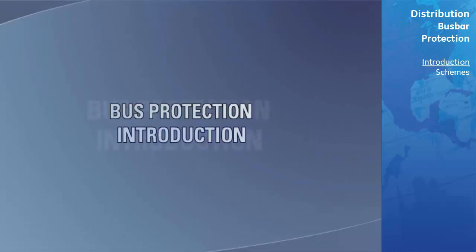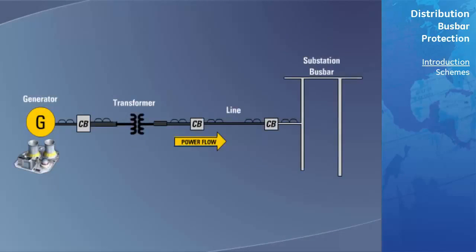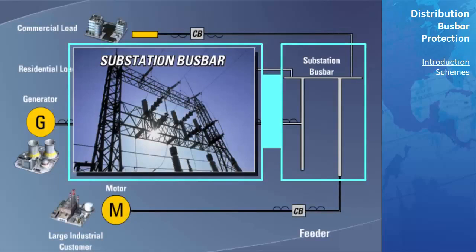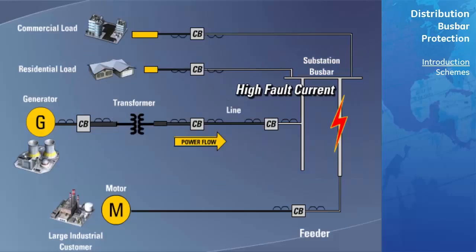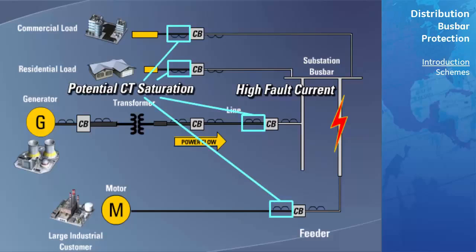One of the most common applications of differential protection is the protection of a bus. Protection of power system bus bars is one of the most critical relaying applications. When a fault occurs within the bus bar areas of a power system, fault current levels may be very high. In spite of this, some of the circuits connected to the bus may have their current transformers insufficiently rated, creating a danger of significant CT saturation and jeopardizing security of the bus bar protection system.